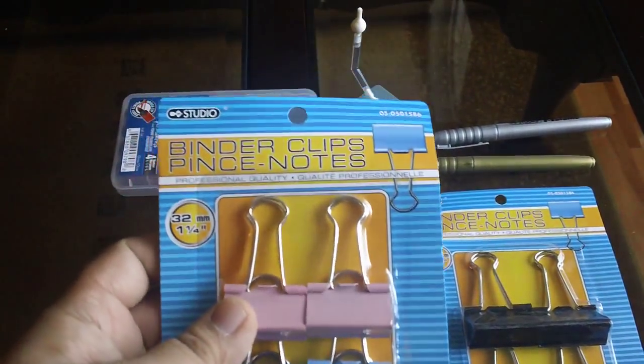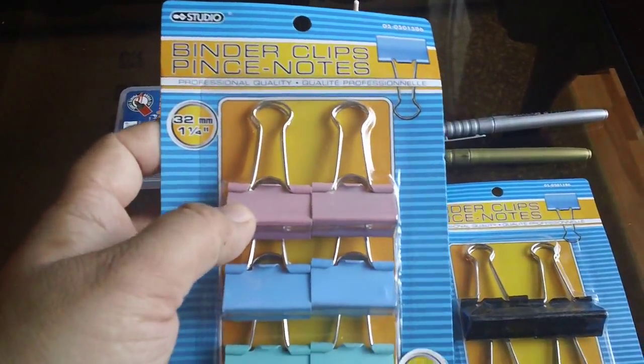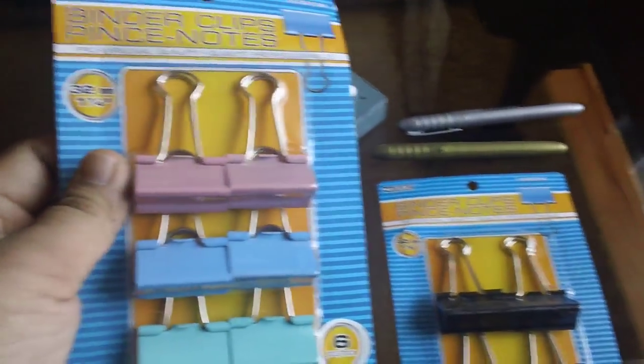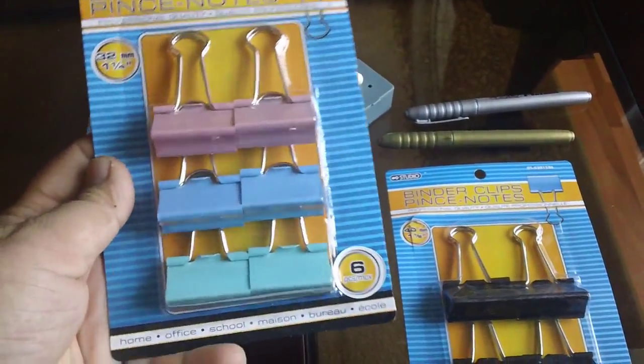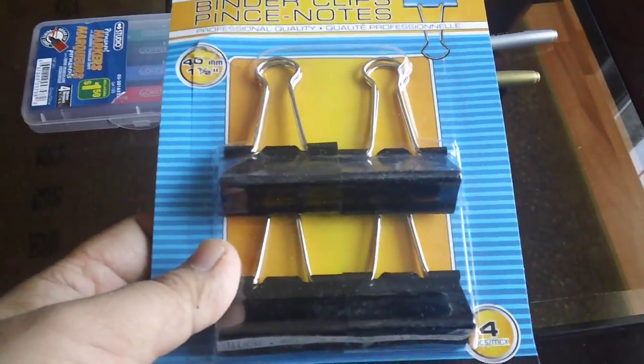You can also use a rubber band too obviously but this is faster. And also when you're painting and if you need to hold something you can use these too to have an extra grip. These are the smaller type, a dollar. And these are the bigger type, again a dollar.